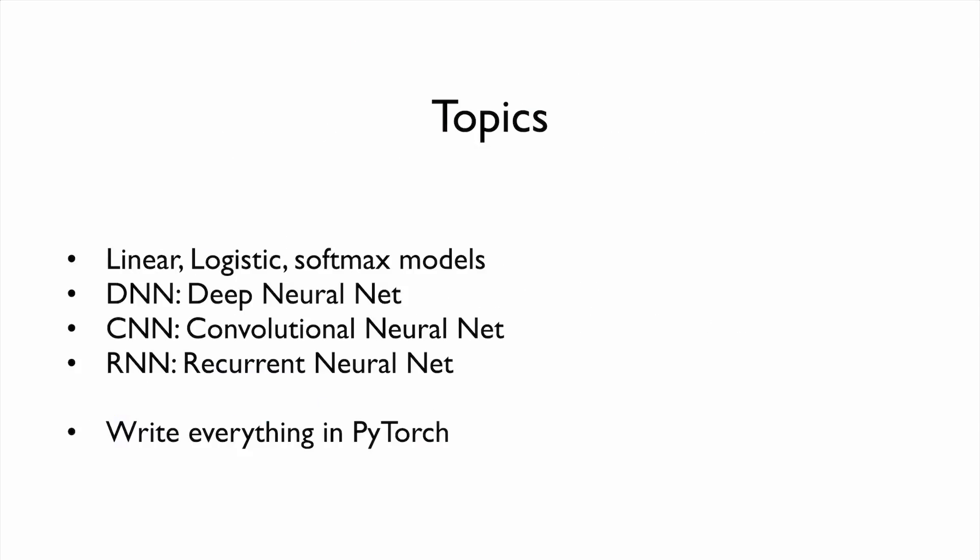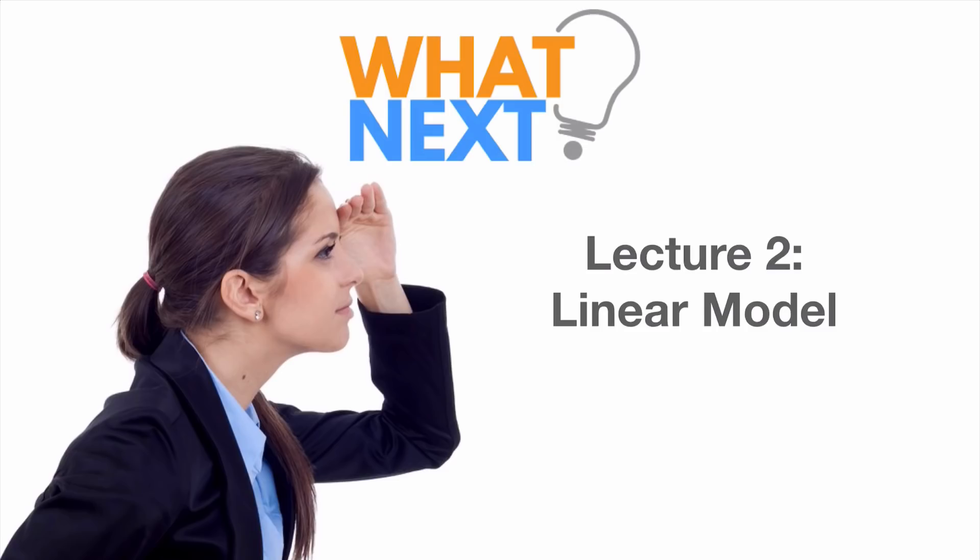The rest of the course, we're going to cover some basic concepts, linear, logistic, softmax models. And then also we're going to cover DNN, CNN, and RNN, which are most important deep neural net architectures. And then we're going to write everything in PyTorch. Next, we're going to talk about linear models.